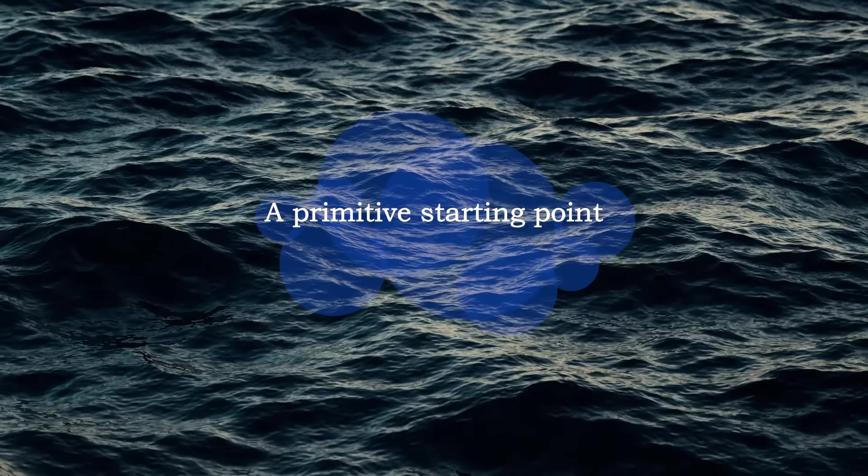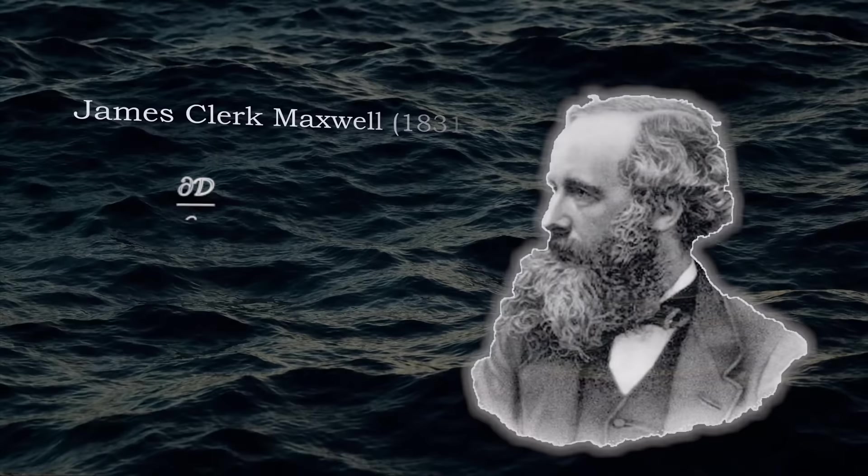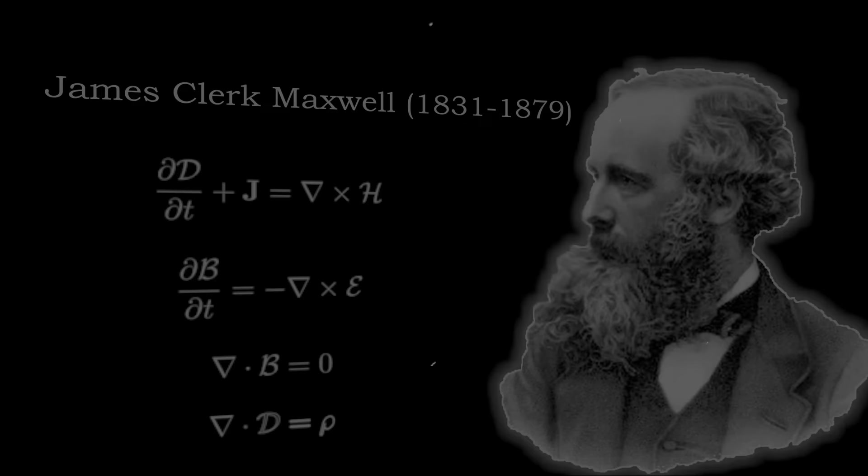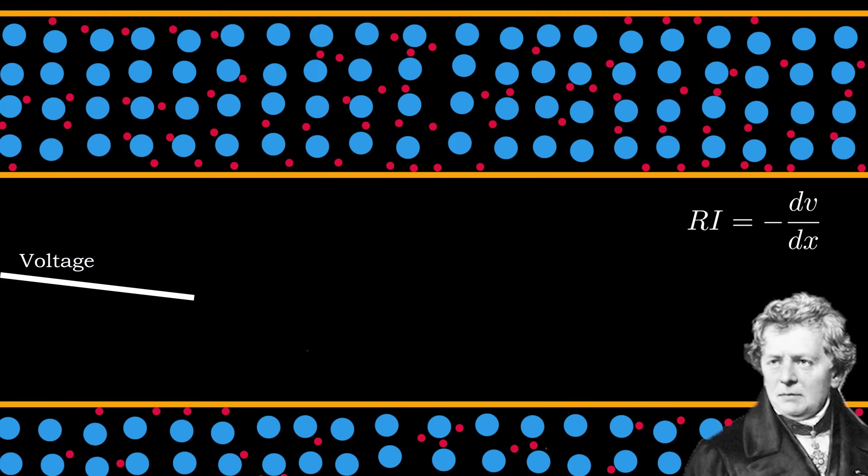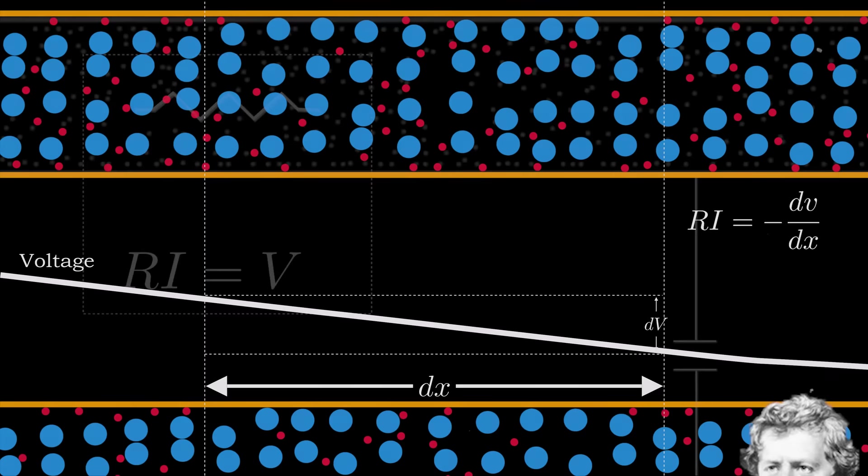This was a time before Maxwell had published his famous treatise on electromagnetism. And circuit theory itself was still very much in its infancy. Nonetheless, Thomson had two starting points. First, the recently discovered Ohm's law. Today, we take for granted the meaning of Ohm's law, that the voltage drop along a conductor is the product of the current passing through it and the resistance of the conductor itself.